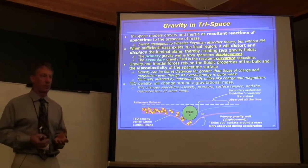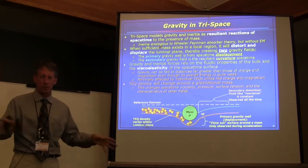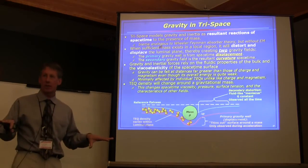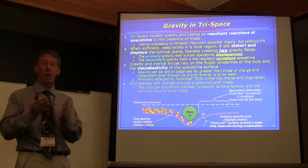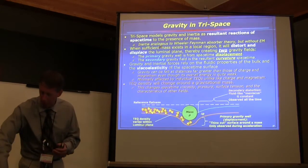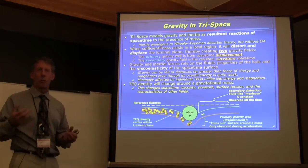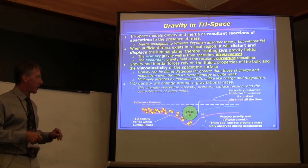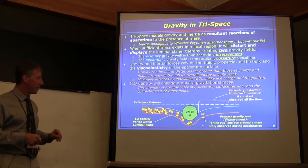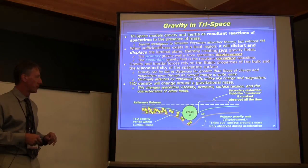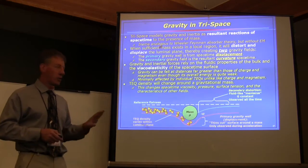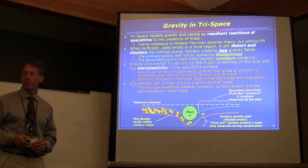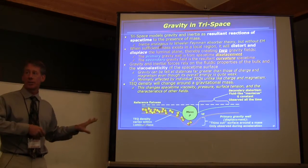Think of it as almost a buoyancy effect or displacement — there's a different density of teqs moving the others out of the way. I have no idea where that boundary is — like the edge of this table versus the air at the subatomic level. Instead of mass sitting on top of the surface, it sits in the surface where the luminal plane takes the shape of the mass.